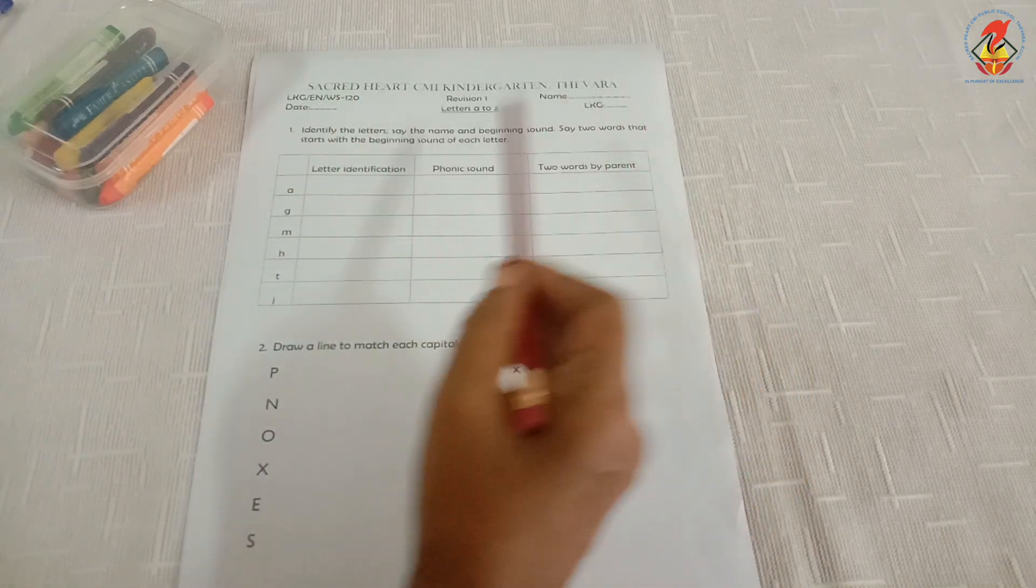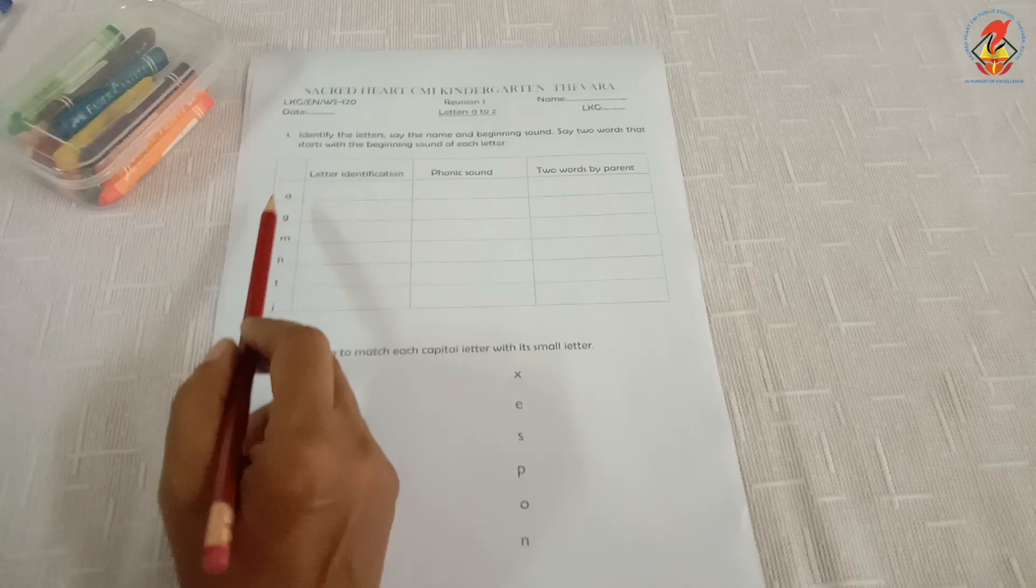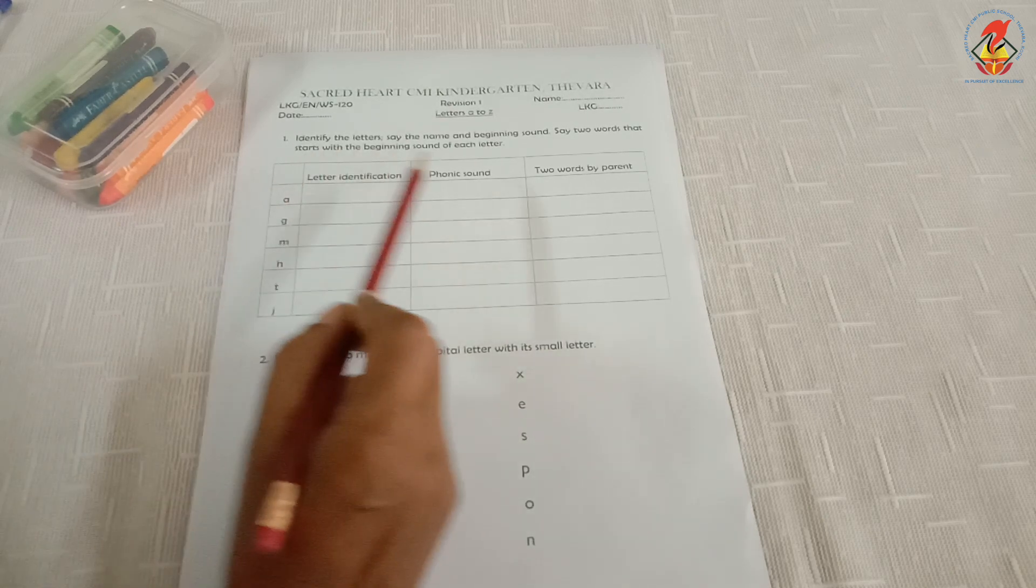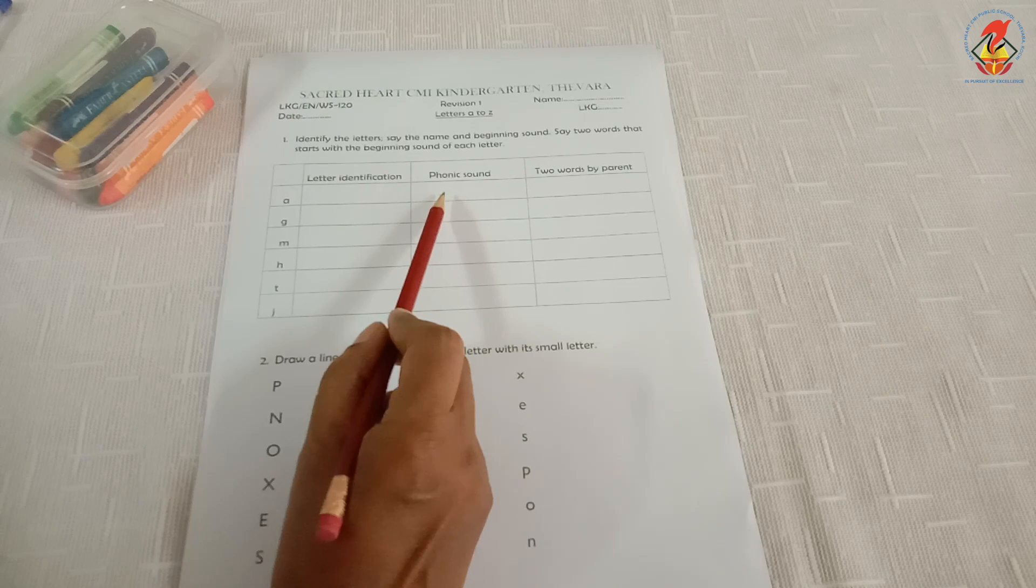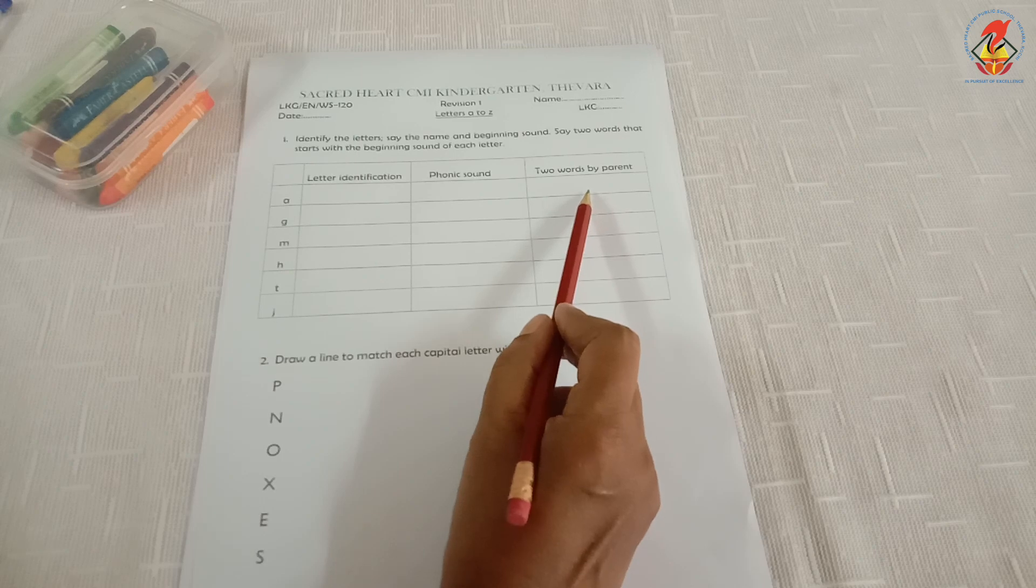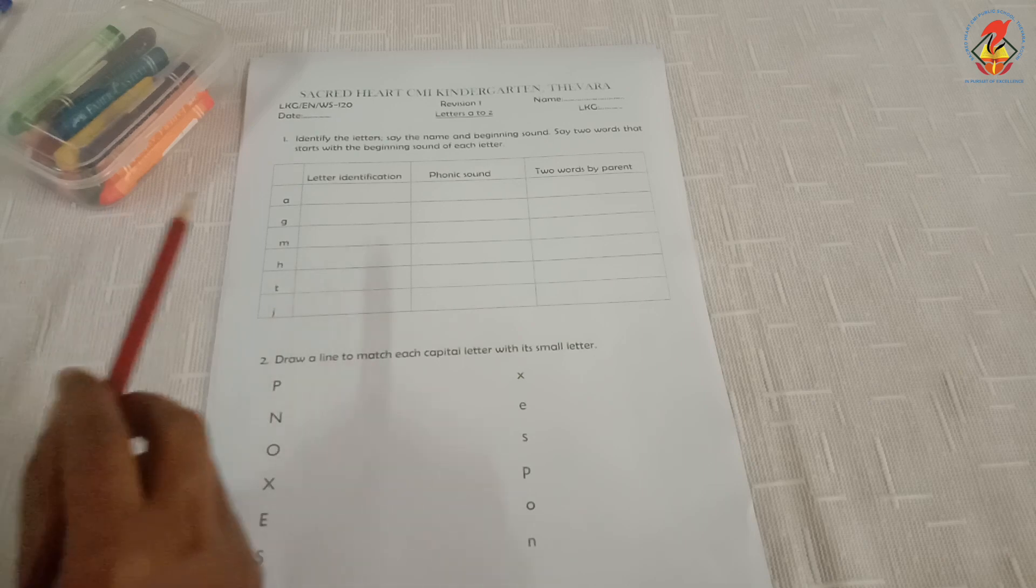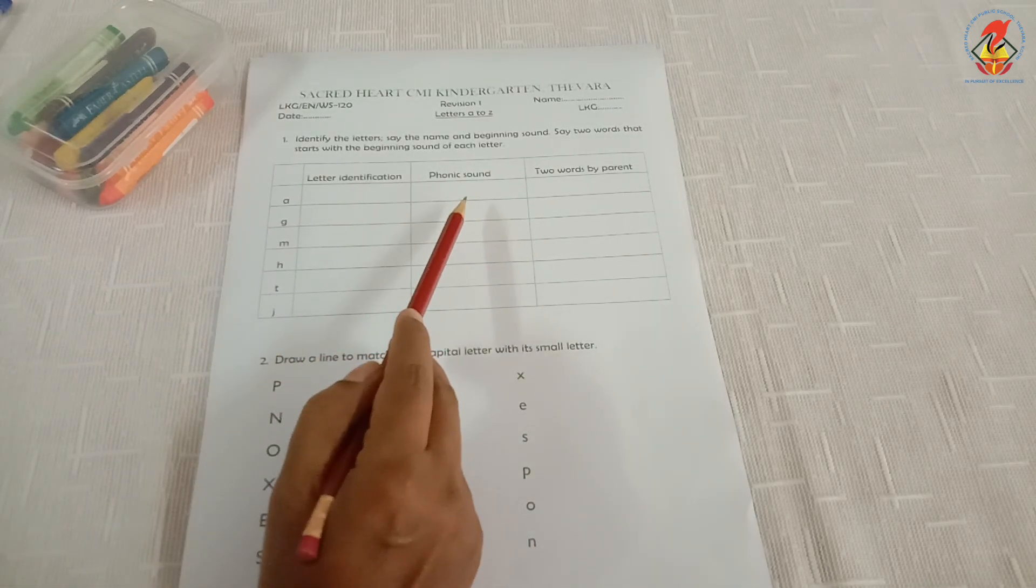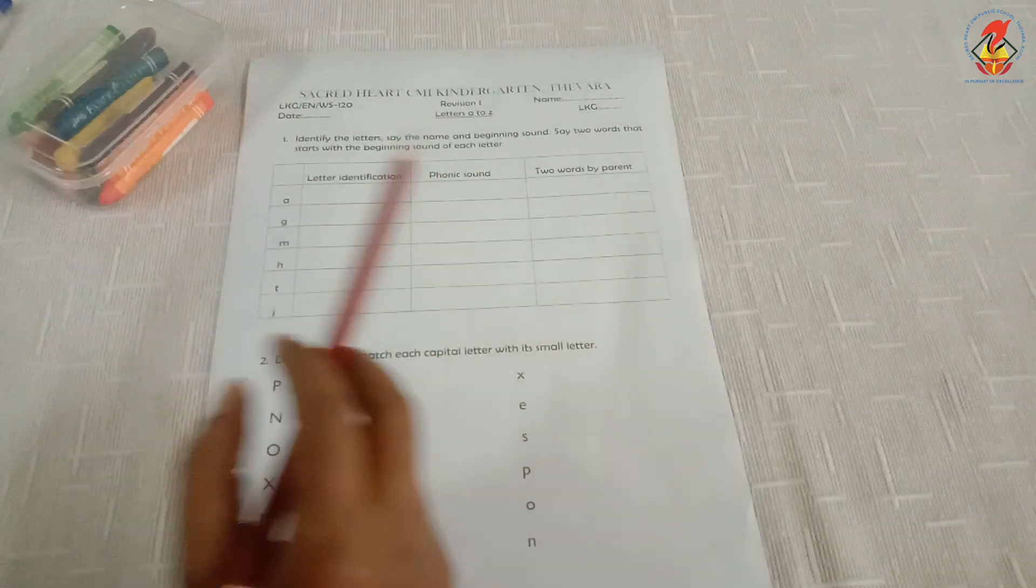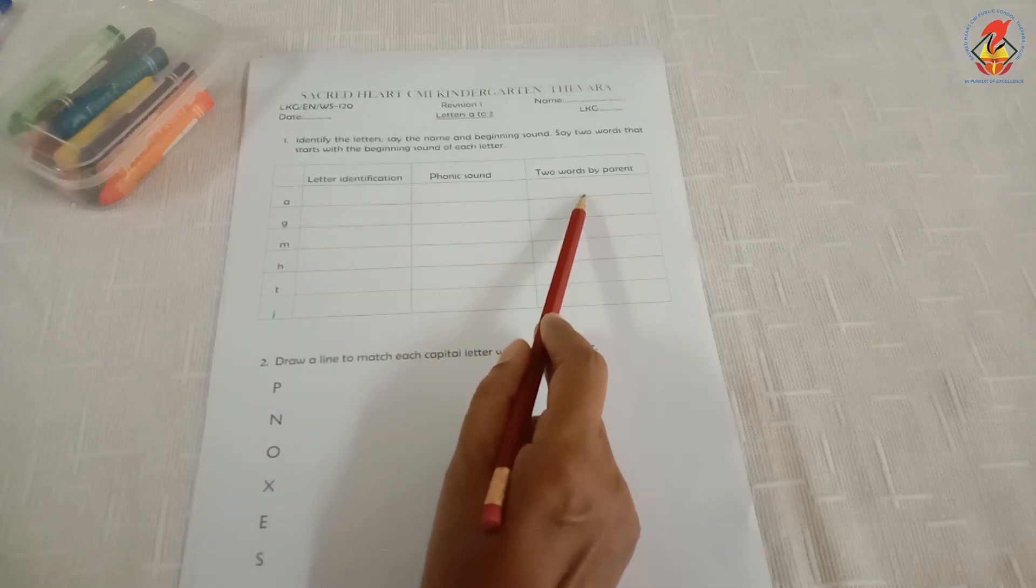Say two words that start with the beginning sound of each letter. Children, you have to identify each letter, say its name, then the sound, and finally say two words that begin with the sound of that letter. Parents, in the first two columns, put a tick mark for the correct identification and sound. In the third column, please write down the words answered by your child.